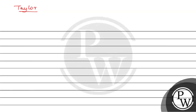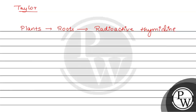Taylor ने work किया on a plant called VCR Faba. इन्होंने plants को grow किया, plants के young root cells को लिया, और इनको एक medium में डाल दिया जो contain करता है radioactive thymidine. Thymidine की speciality यह है कि यह सिर्फ DNA में पाया जाता है — found only in DNA.